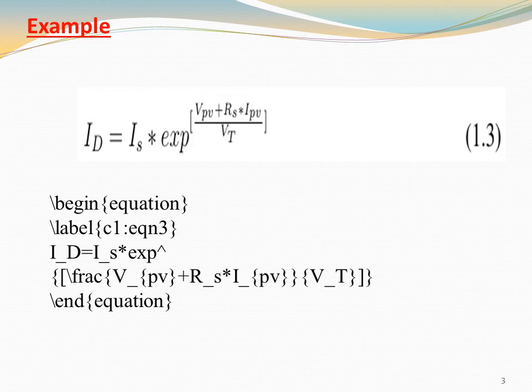I_D equals I_s times exp with \frac, where the numerator is V_{pv} + R_s times I_{pv} and the denominator is V_T. Close the brackets and the fraction, then end equation and execute the command.